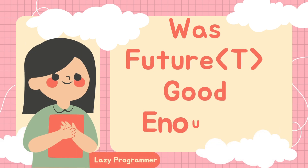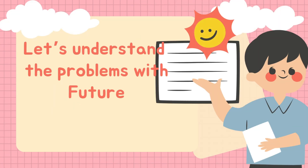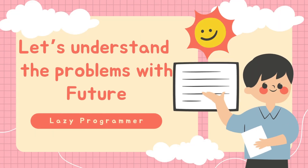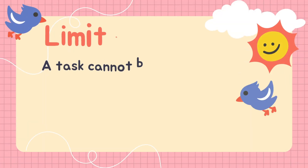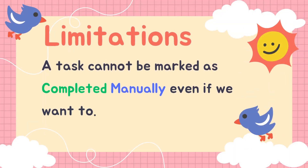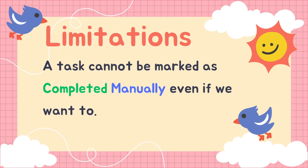Even though Future was a big step in Java multi-threading, there were still many limitations associated with it. Let us begin with the limitations of Future before we introduce CompletableFuture as a solution. The first limitation is that in Future we cannot mark any task completed manually, even if we want to. If a task is submitted, we can only cancel it — we cannot mark it completed manually.